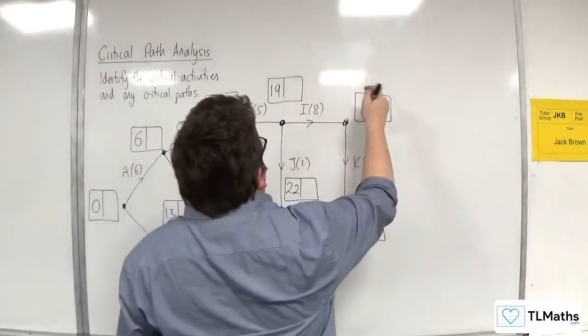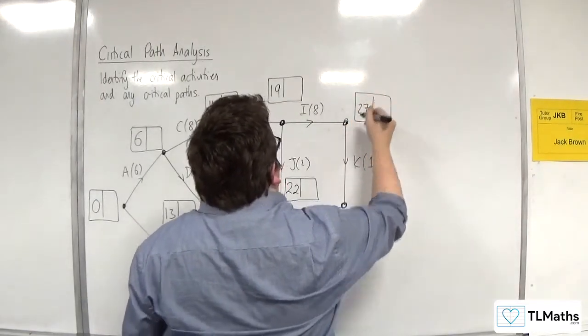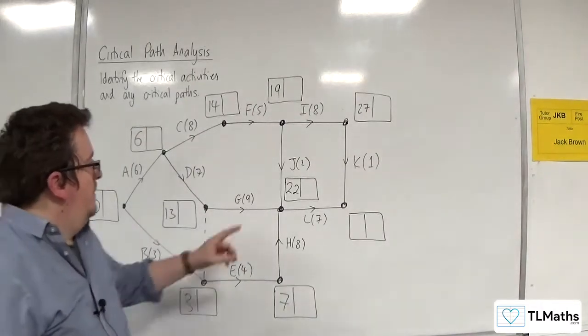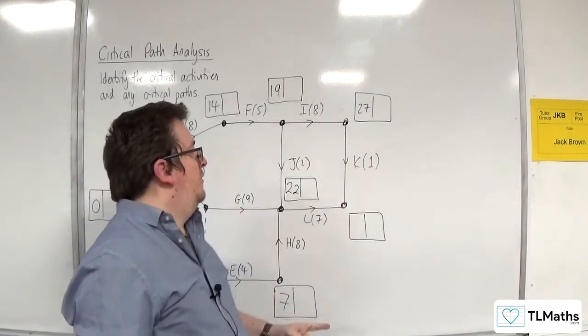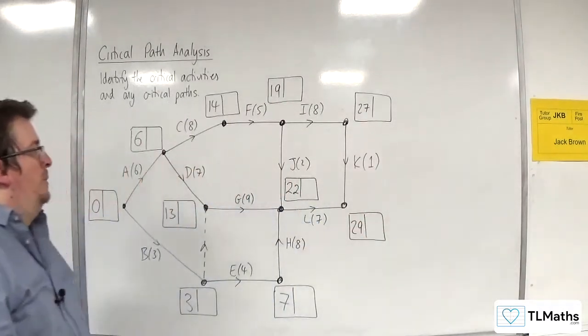Now for this one, we've got 19 plus 8, so 27. Just about to say 17, 27. Then we've got 22 plus 7, so 29, or 27 plus 1, which is 28, so 29. So that's the forward pass.